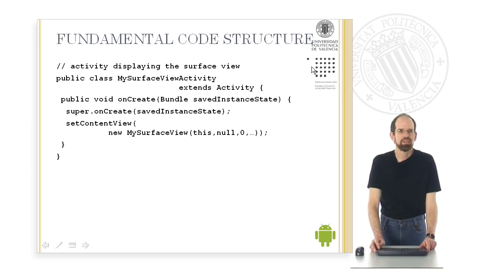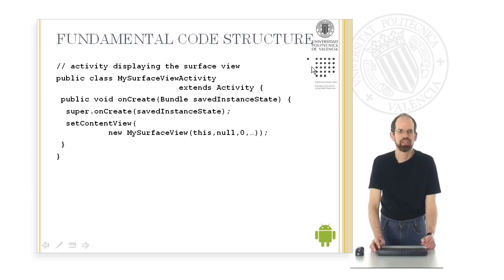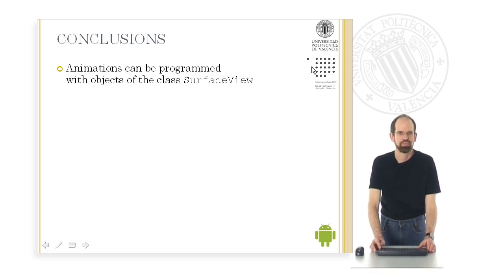This SurfaceView, together with its thread, is then generated as a new object in the activity and displayed on the screen by setContentView.